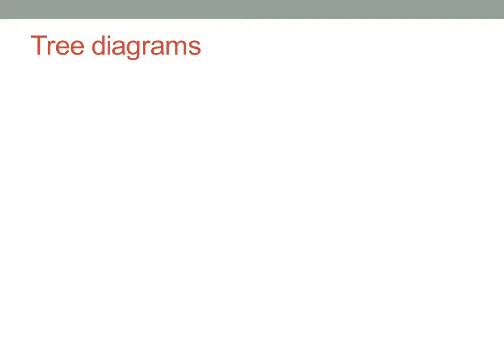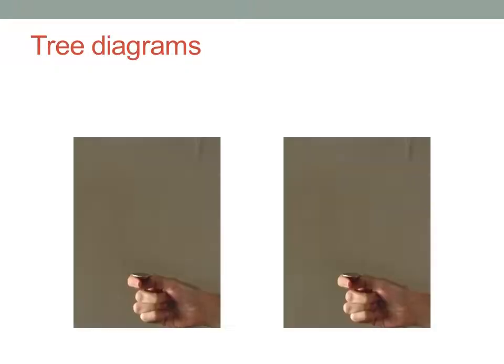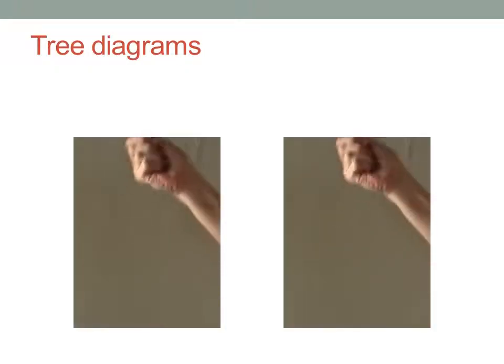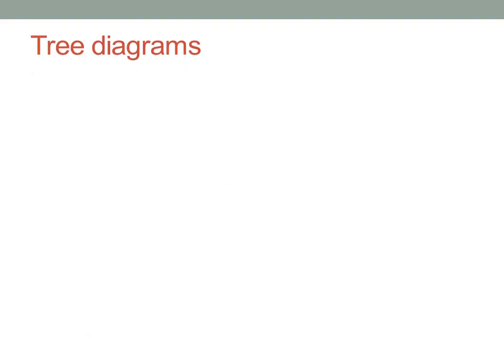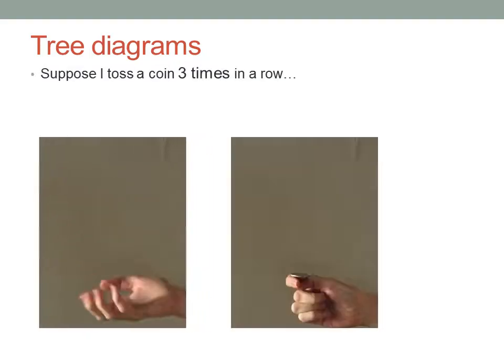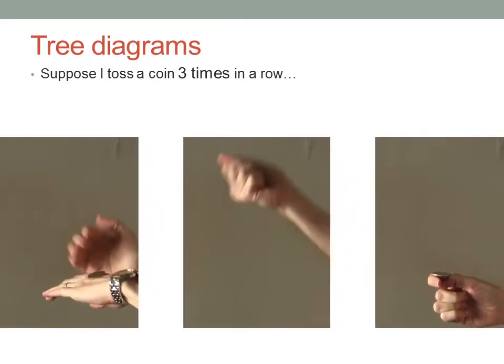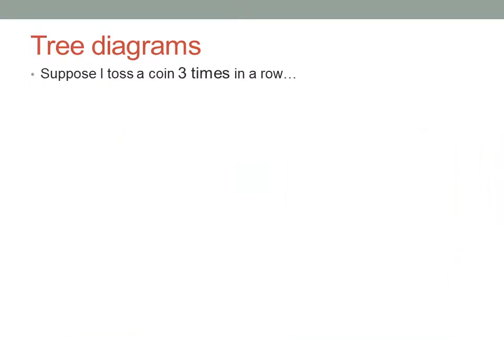A grid can be used to model a compound event involving two independent actions — for example, tossing two coins. But suppose you want to toss a coin three times in a row. You can't draw a grid for three coins; it would need to be a three-dimensional table, which is a bit difficult to draw on paper.